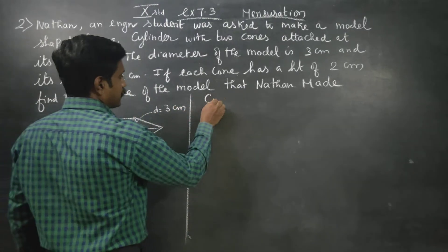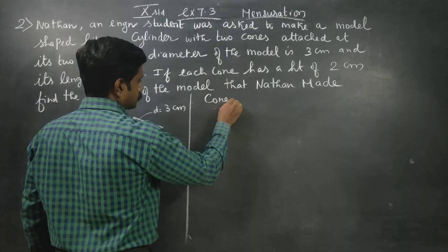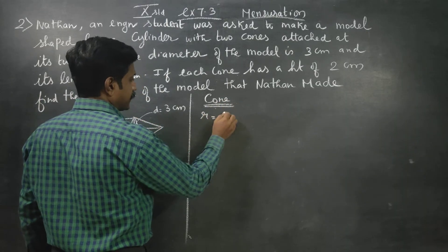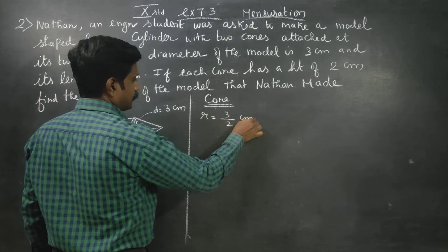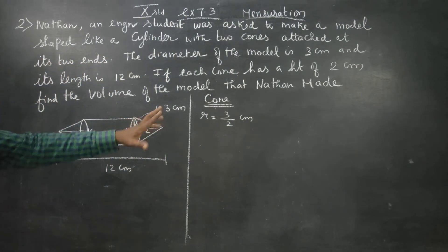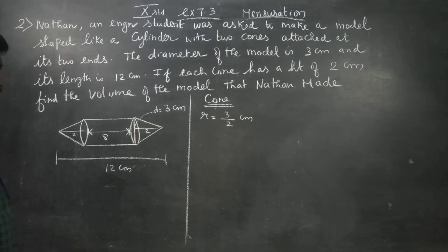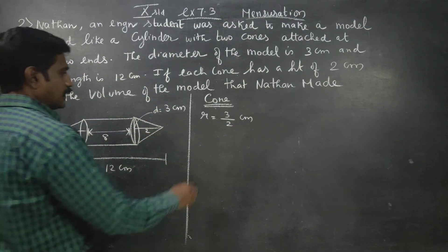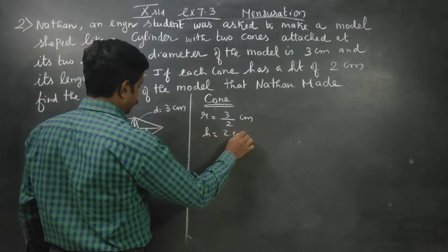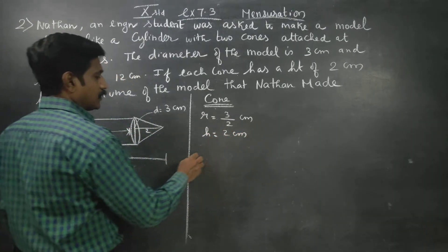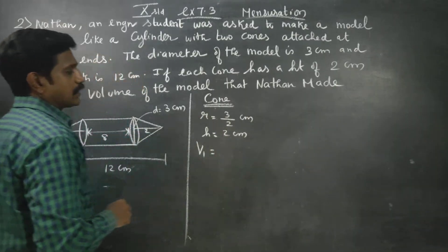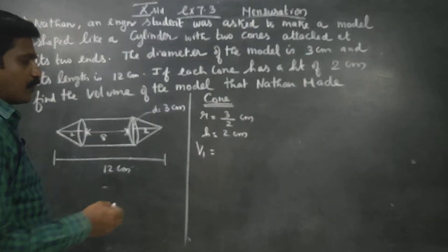For cone 1: the radius is diameter divided by 2, that is 3 by 2. The height of each cone is 2 centimeters. Now we find the volume of the cone.